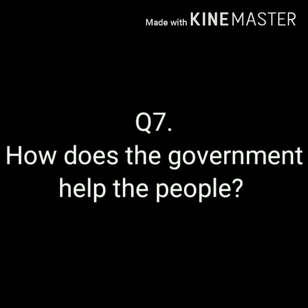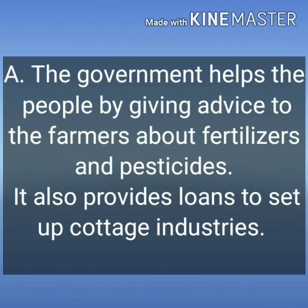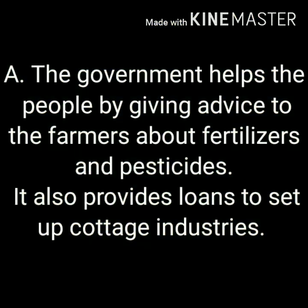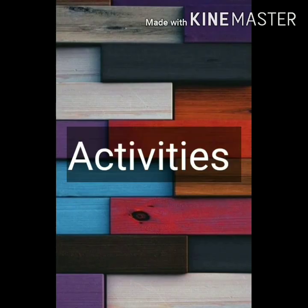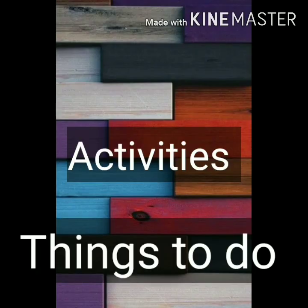Question number 7 is: how does the government help the people? The answer is the government helps the people by giving advice to the farmers about fertilizers and pesticides. It also provides loans to set up cottage industries. Disabled and old people are provided medical care in hospitals. Adult literacy centers have been set up to teach people to read and write.